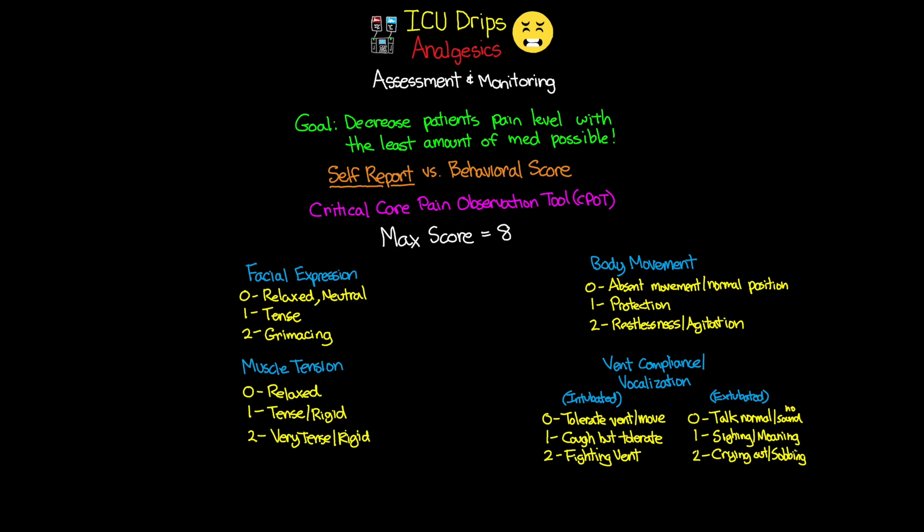Two important notes about behavioral scores: first, the CPOT may be less sensitive in brain-injured patients. Second, while people often talk about using vital signs to detect pain, there isn't solid evidence that vital signs can be used as a true indication of pain. If you do see signs that might suggest pain in vital signs, use that as a cue to go in and do further assessment using the CPOT to truly determine if your patient is in pain.